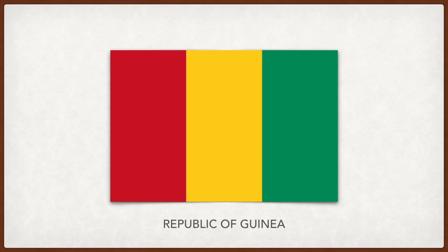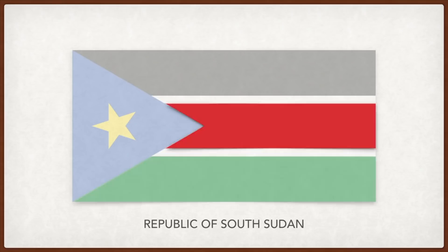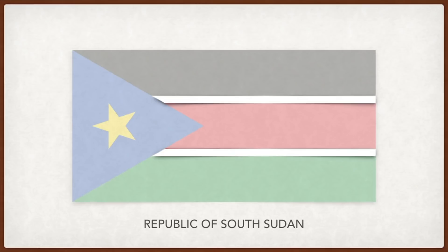South Sudan: black represents the people, red the bloodshed for independence, green the country's agriculture and natural wealth, white represents peace after many years of struggle for independence, blue represents the waters of the Nile River — a source of life — and yellow represents unity, hope, and determination.